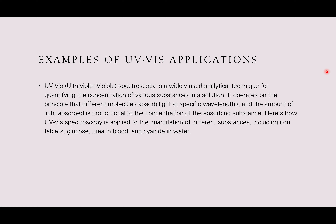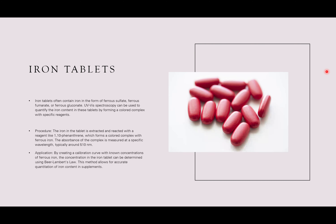Going back to absorbance and concentration — this is a graphical representation of Beer-Lambert's law showing that absorbance is directly proportional to concentration. As the concentration of the substance increases, the absorbance of light increases, with the cell length also factored in, forming a line of best fit.